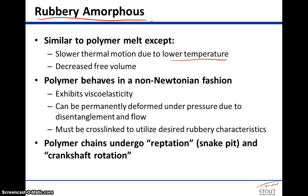In the rubbery amorphous phase, which is in between the glassy phase and the molten phase, there is decreased free volume, which is a direct result of that lower temperature and therefore lower average kinetic energy. In this phase, the polymer behaves in a non-Newtonian fashion. This is the range where you get viscoelasticity — under light pressure, the polymer chains basically act as springs, loading under that pressure and then springing back. However, if you apply greater force, then that polymer can permanently deform due to disentanglement and viscous flow.